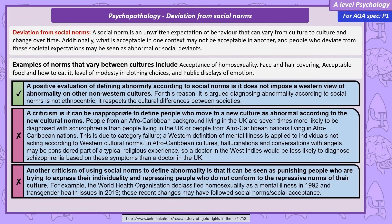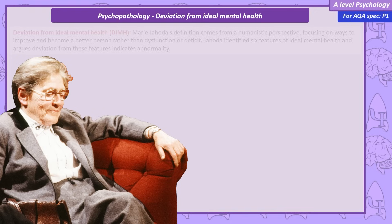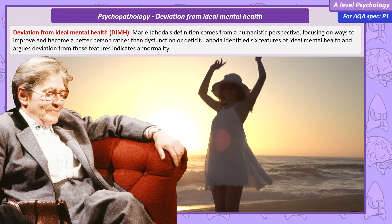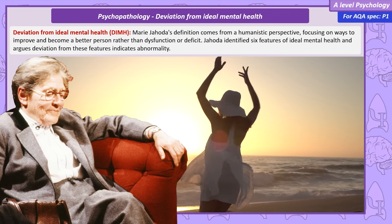Another criticism of this definition of abnormality is it can be seen as punishing people who are trying to express their individuality or repressing people who do not conform to cultural norms. Jahoda's deviation from ideal mental health definition comes from a humanistic perspective, meaning it doesn't focus on dysfunction or deficit but instead on ways to improve and become a better person.